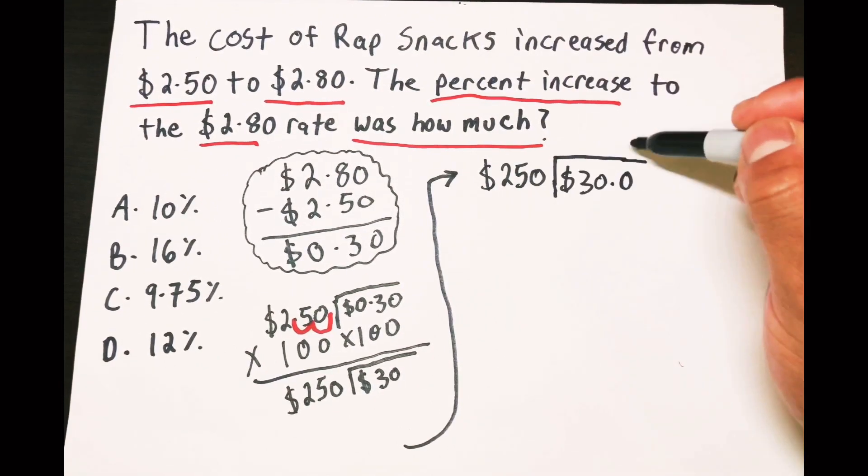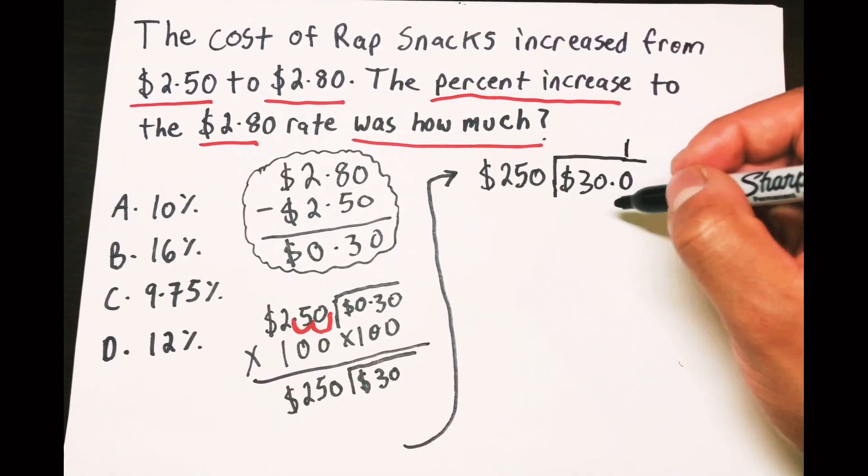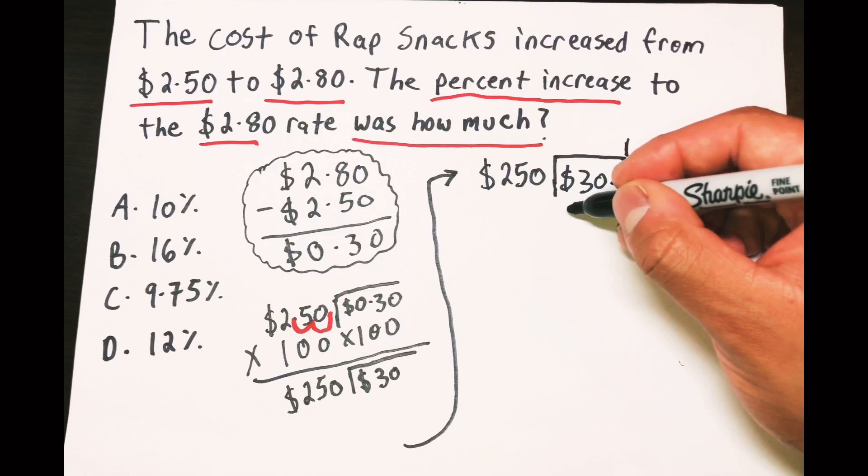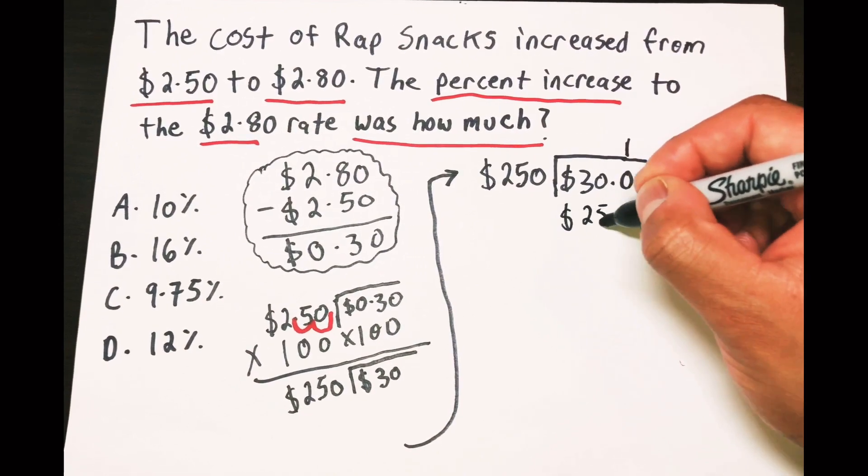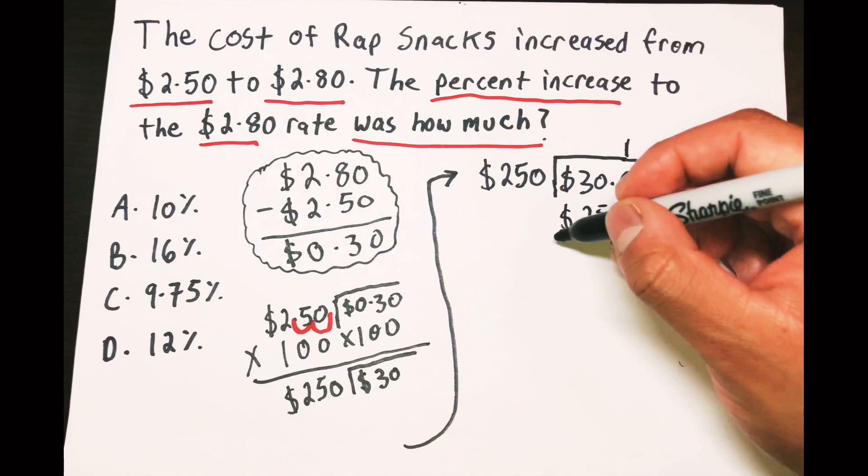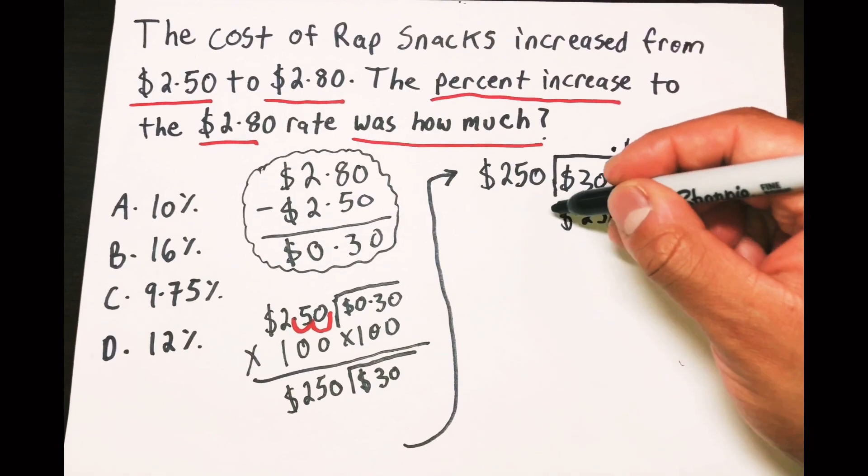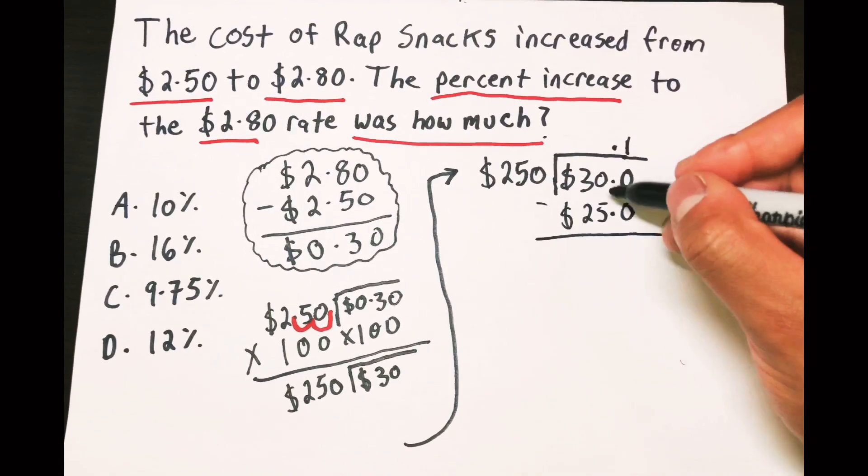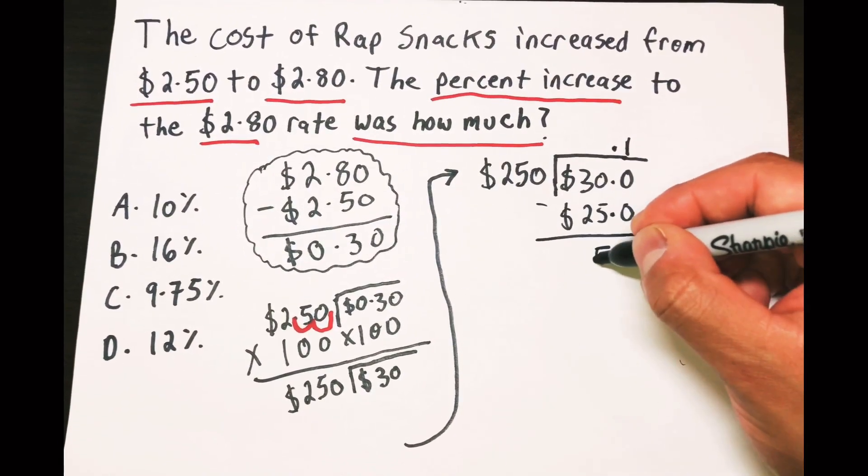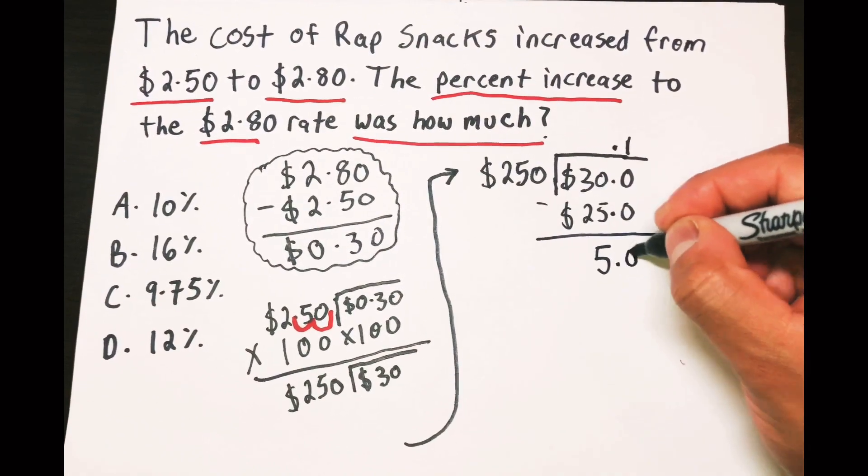One times 250 is gonna be 250. Alright, and then we could just drop that decimal point here, and if we drop it there it's gonna come up here too as well. Okay, we're gonna subtract that, 300 minus 250, that's 50.